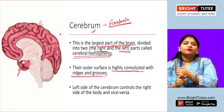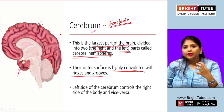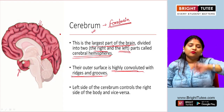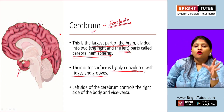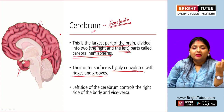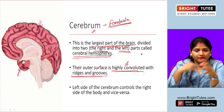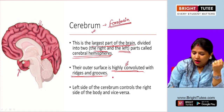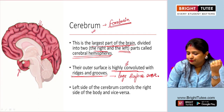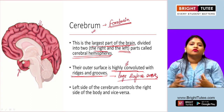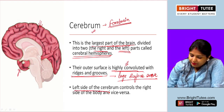Whatever you are learning right now is being processed in short-term memory, and from there it transfers into long-term memory stored in your cerebrum. Based on that knowledge, decisions are made. This is why the cerebrum is highly convoluted — the ridges and grooves give a large surface area to process the large amounts of information coming in.